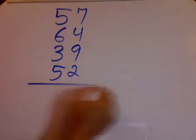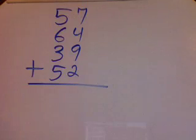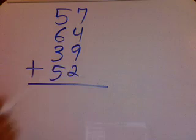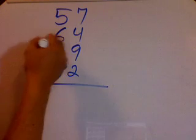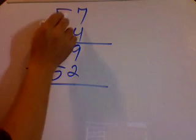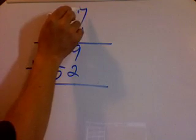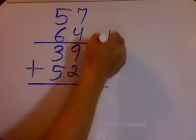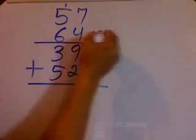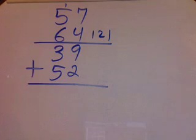Different people have different methods, but my method is this: I add the 7 and the 4, which gives me 11. This one becomes 12, so I have 121 right there.